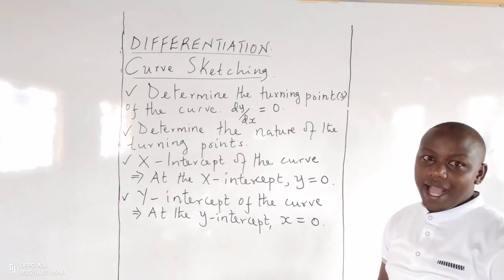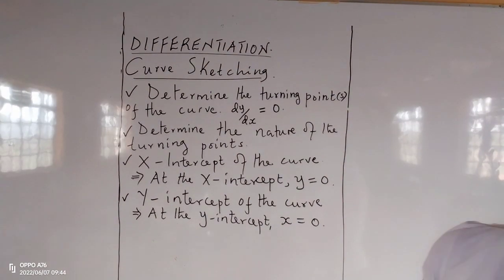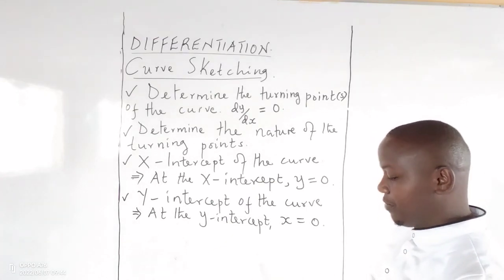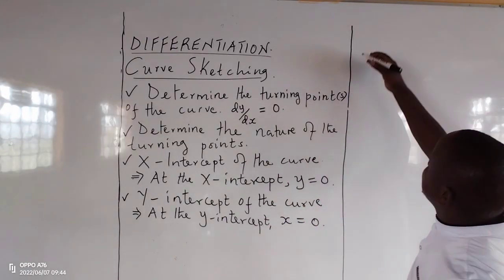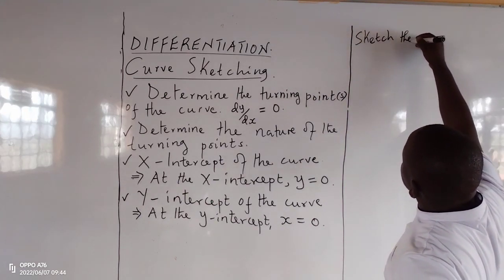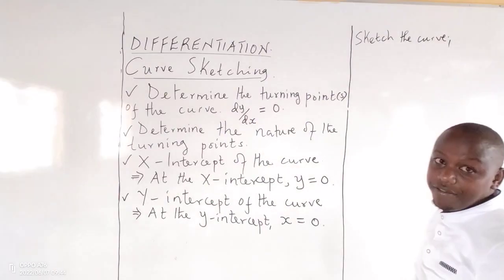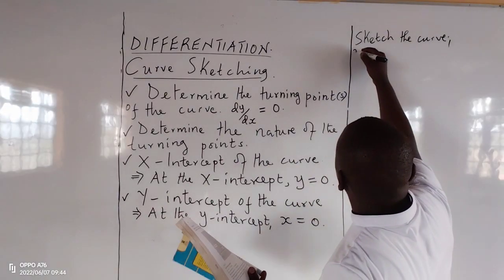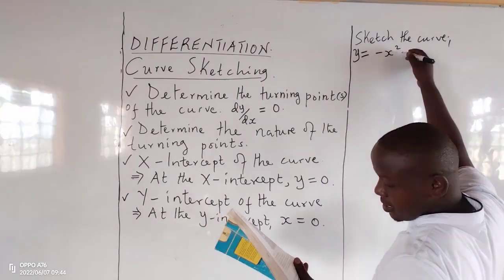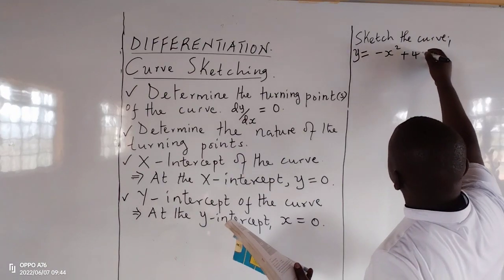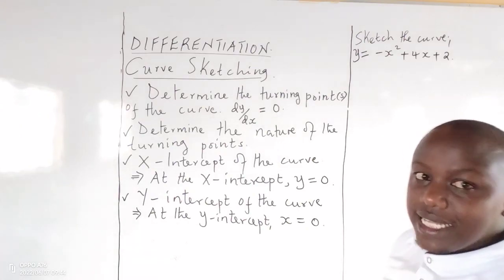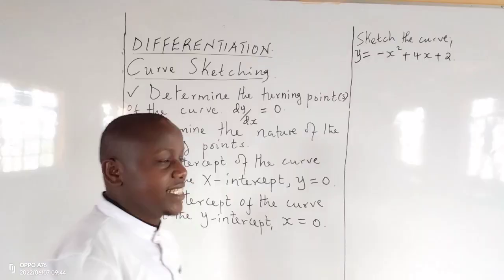We are going to consider an example. The question says: sketch the curve with an equation y equals negative x squared plus 4x plus 2. So this is the curve which we are going to obtain as our sketch.